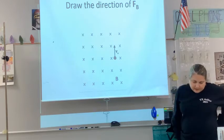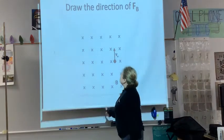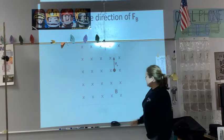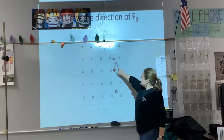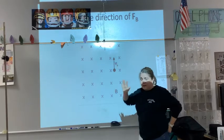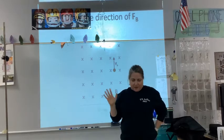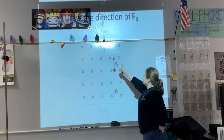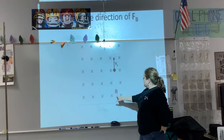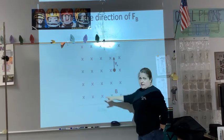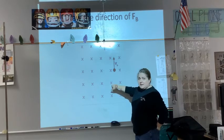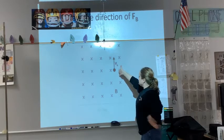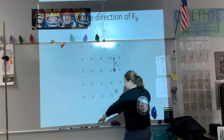Let's go through some examples. This is a positive charge, so we're going to use our right hand. The magnetic field B is represented by x's, and we discussed that an x indicates into the page. I'll point my fingers into the page in the direction of the magnetic field, my thumb in the direction the charge is moving, and the force comes out of my palm — so it would be directed to the left.